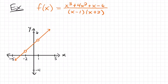Alright, welcome back. We're going to look at some more examples on how to find the limit of a function from its graph. We'll start with this example, and we'll notice that because of the denominator of the function, we're going to have two holes, which you can also see on the graph.